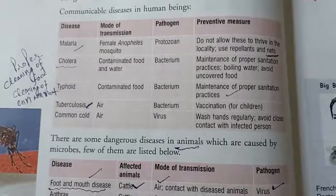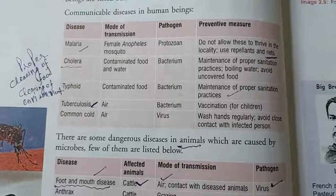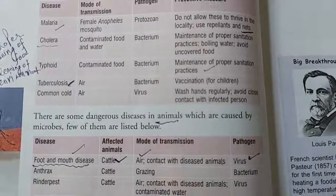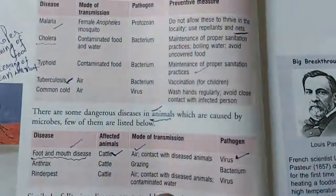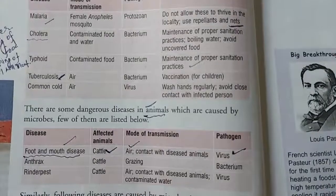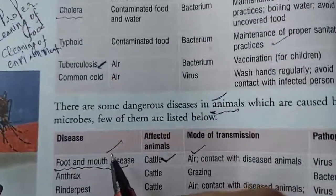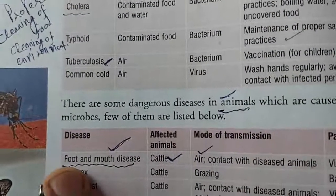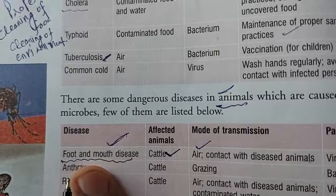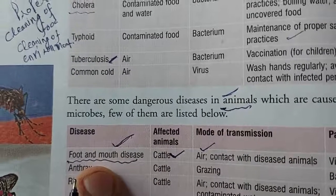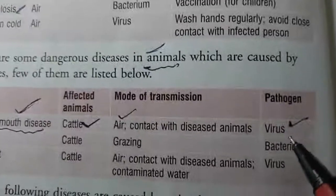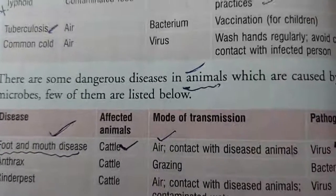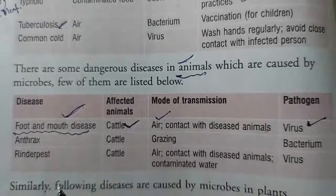Good morning students. In the previous lecture we were continuing with the diseases caused by microorganisms. There are some diseases that are caused in animals like cow and buffalo. They are encountered with foot and mouth disease. In foot and mouth disease, swelling occurs in their foot and mouth and they are not able to eat their food. This disease is mainly due to a virus.